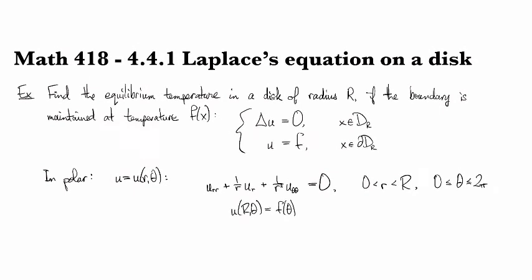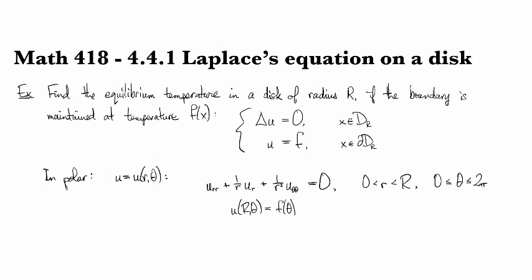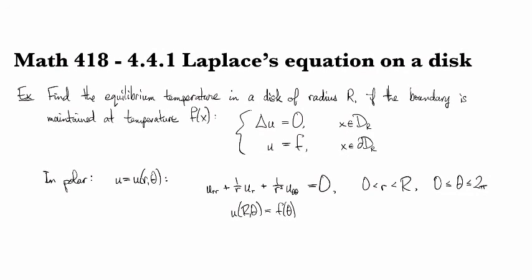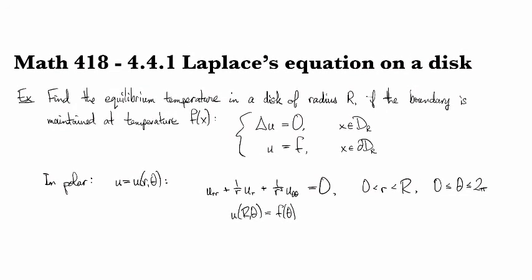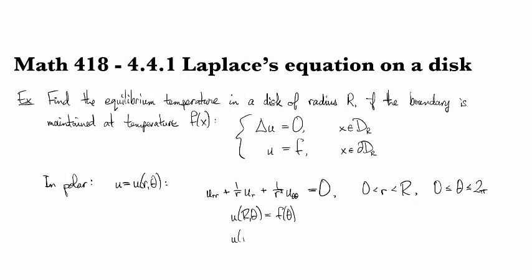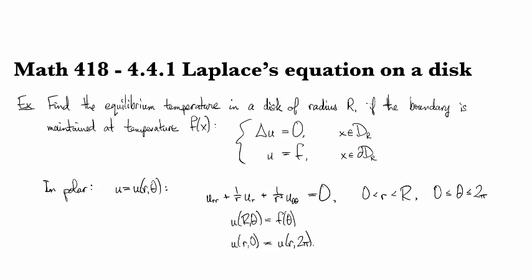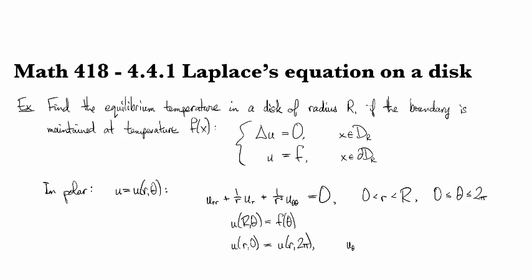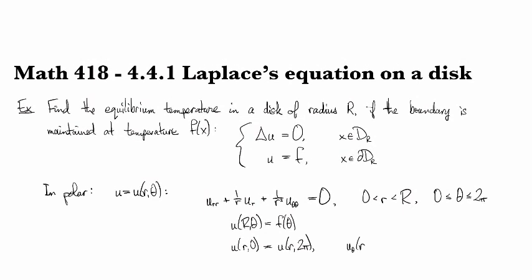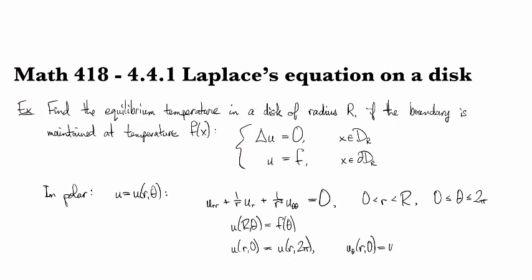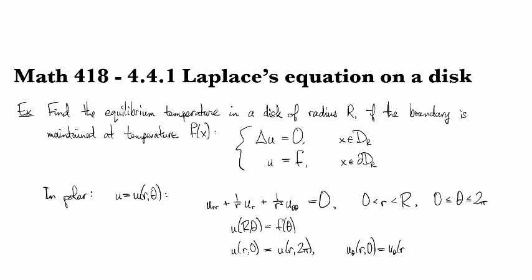There are also implied boundary conditions. Since we're in a disk and our solution is continuous, u(r,0) should equal u(r,2π), and ∂u/∂θ should be the same at both 0 and 2π.